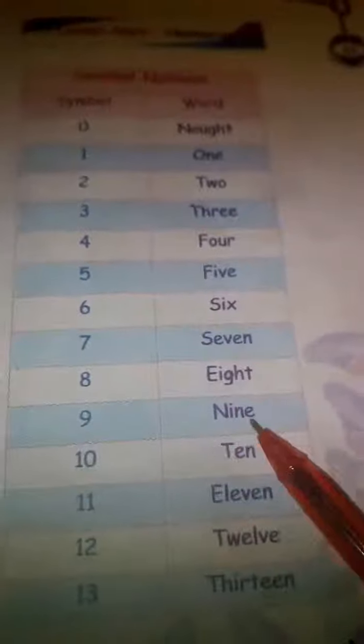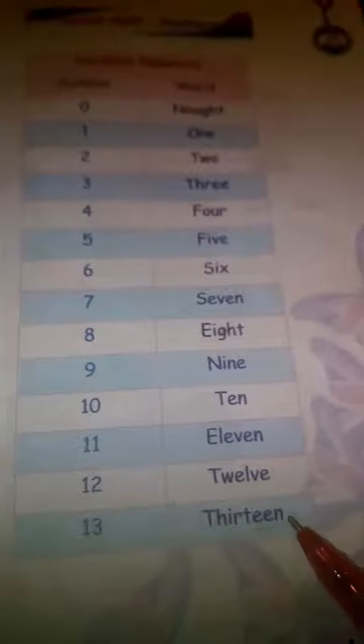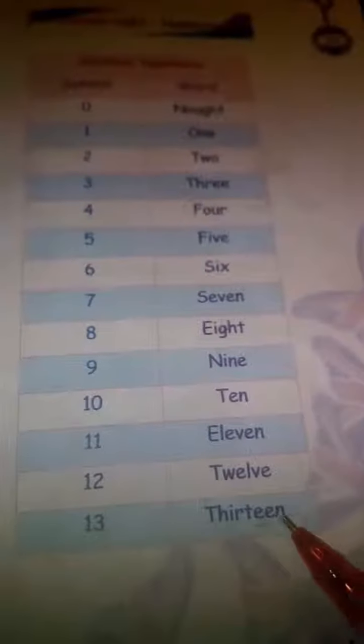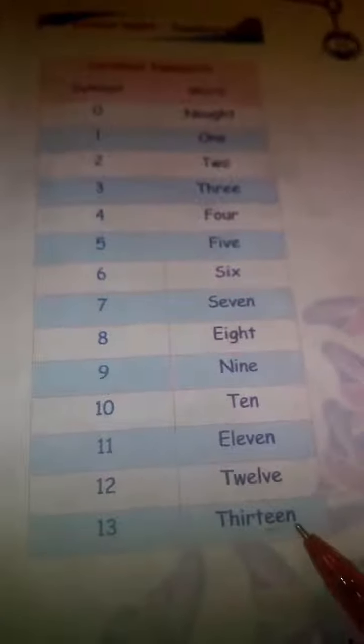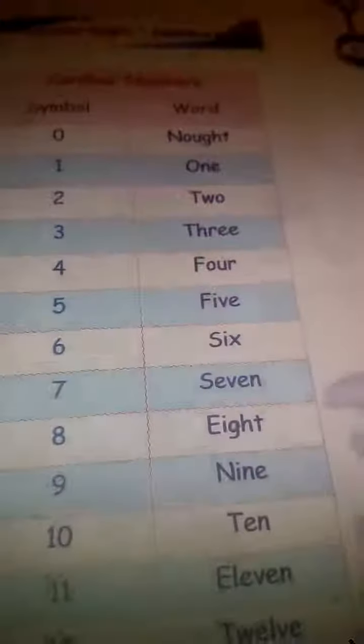Eight. As I told you, GH in the middle we don't pronounce it. Eight, nine, ten, eleven, twelve, thirteen. Thirteen, it is long. Why? Because two vowels together.